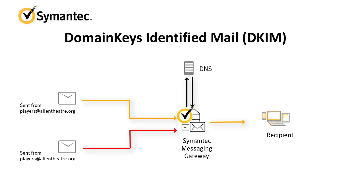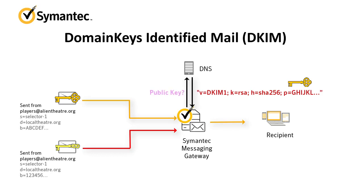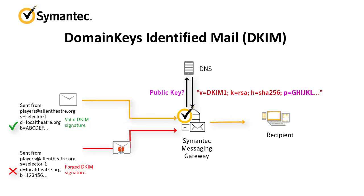For DomainKeys Identified Mail, better known as DKIM, the domain owner signs outbound mail with a private domain key, and adds the matching public key to the domain's DNS records. When a message is received, Semantic Messaging Gateway looks up the DKIM public key, and uses it to compare the original signatures and received signatures in the message header and body. If the signatures match, the message passes DKIM authentication. If the signatures do not match, the message is blocked.